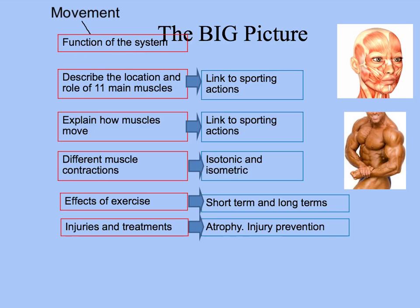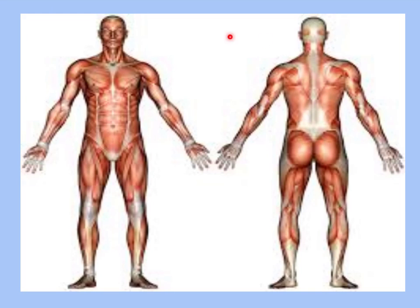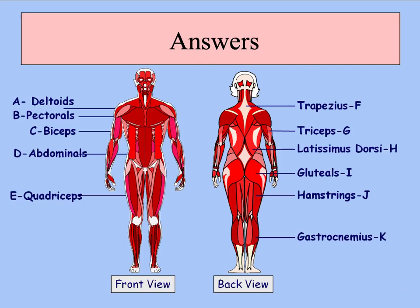Let's now locate the 11 main muscles in the human body. Here you can see a diagram of the human body. Press pause now and have a go at identifying all 11 major muscles, then press play again to see the answers. Here are the 11 answers. If you didn't get them all right, go back and have another attempt and then move forward again.